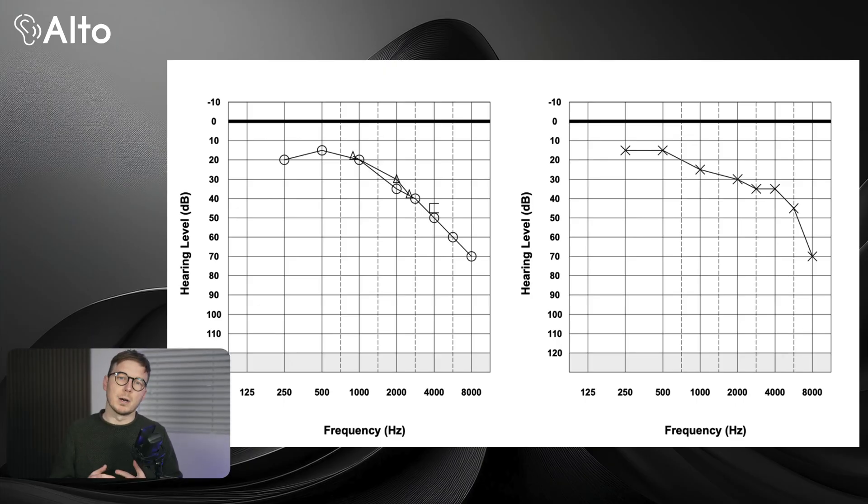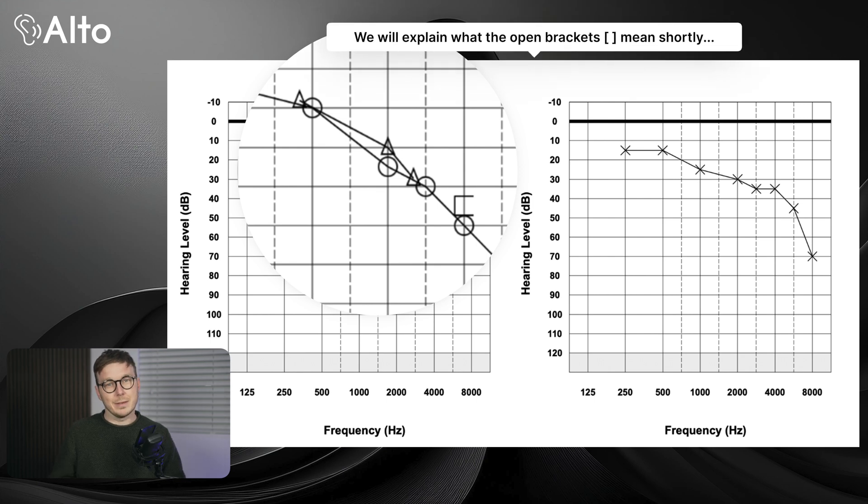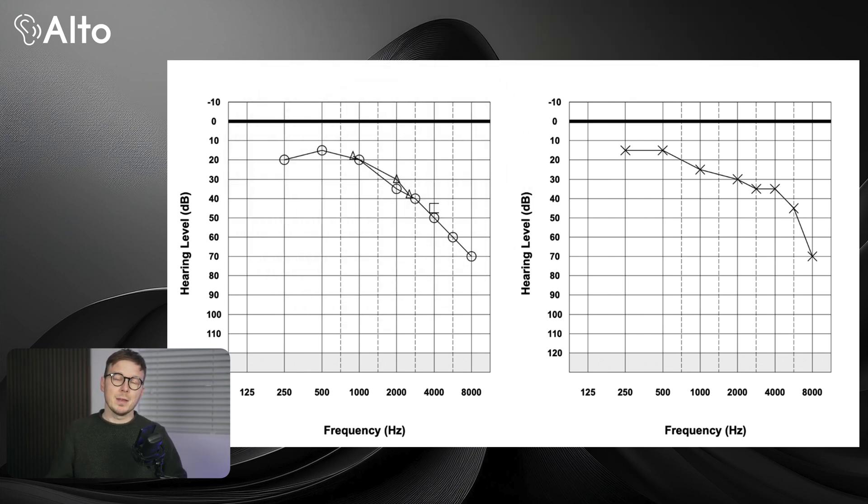Air conduction doesn't tell us where a hearing problem is occurring. That's where bone conduction comes in. Instead of sending sound through headphones or inserts, we use a small vibrating pad behind your ear. This sends sound directly to the inner ear, bypassing the outer and middle ear. Bone conduction results are marked as triangles or open brackets. If your air conduction and bone conduction results are the same, that means your hearing loss is sensorineural, which means it's caused by damage to the inner ear or the auditory nerve.